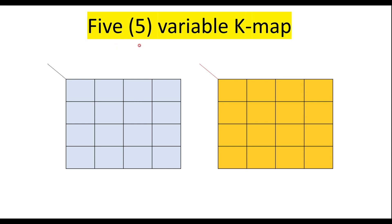Let me assume the 5 variables are a, b, c, d, e. So for 5 variables, we need 2 to the power 5, that is 32 cells. If we use one 4-variable Kmap, then maximum we can use 16 cells. So for 5 variables, we are supposed to use 2 Kmaps.